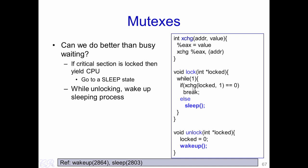If the value returned is equal to 0, then we break from this loop and that process would have acquired the lock and can execute in the critical section. However, if the exchange returns a value which is not 0, we go into the else branch and execute a function called sleep. The sleep function would cause the process to go from the running state into the blocked state, essentially waiting for a particular operation to arrive. Until this operation arrives, the process will not get any CPU time.